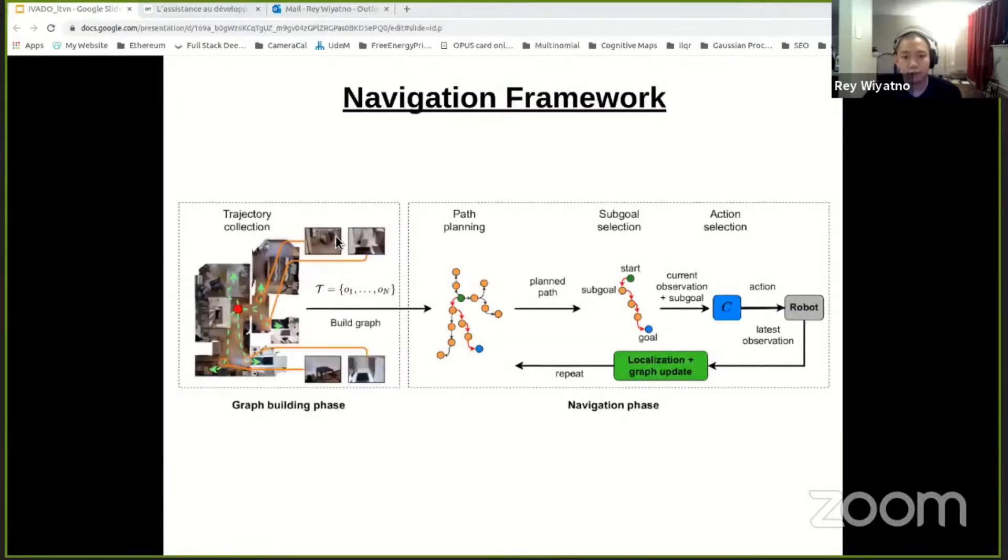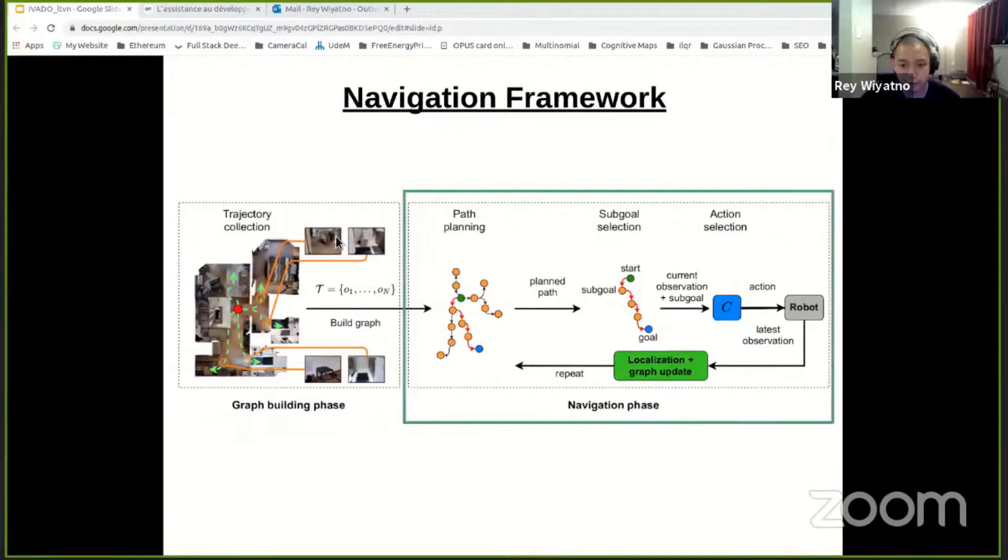So our navigation framework consists of graph-building and navigation phases. During graph-building phases, the robot collects sequences of observations from the environment and builds a topological graph from a previously learned model.